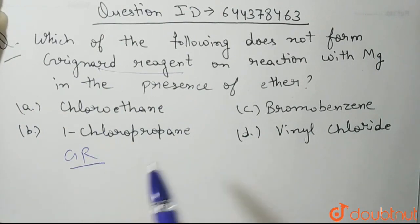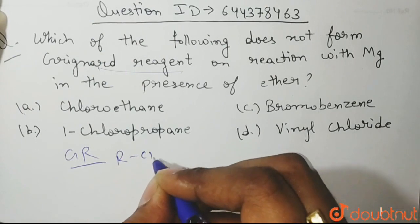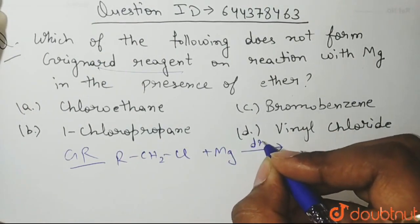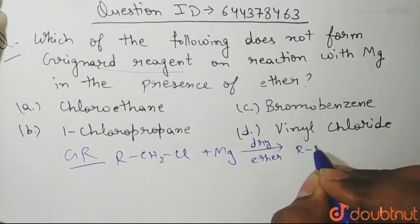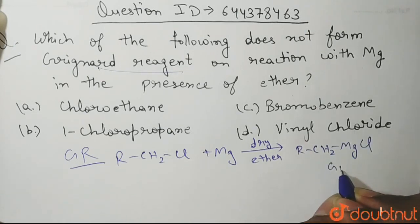Let's see here. We know that whenever we treat, let's say I'm taking any haloalkane, RCH2Cl and I treat it with magnesium in presence of dry ether, it leads to the formation of Grignard reagent. That is, it forms RCH2MgCl. This is our Grignard reagent.